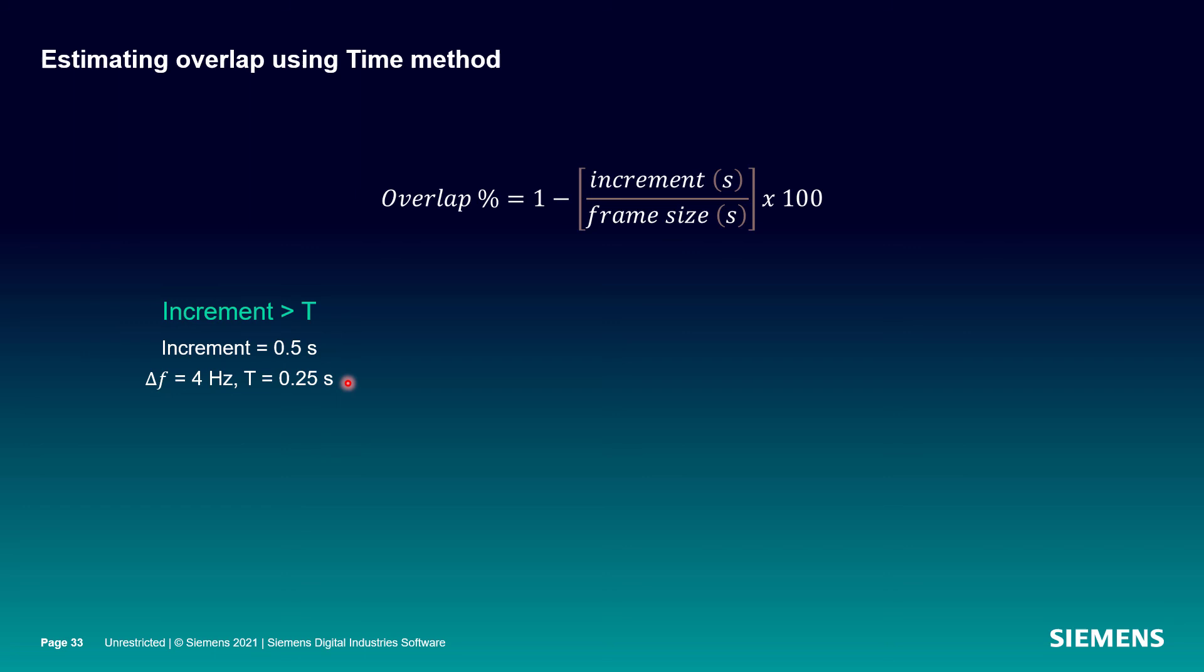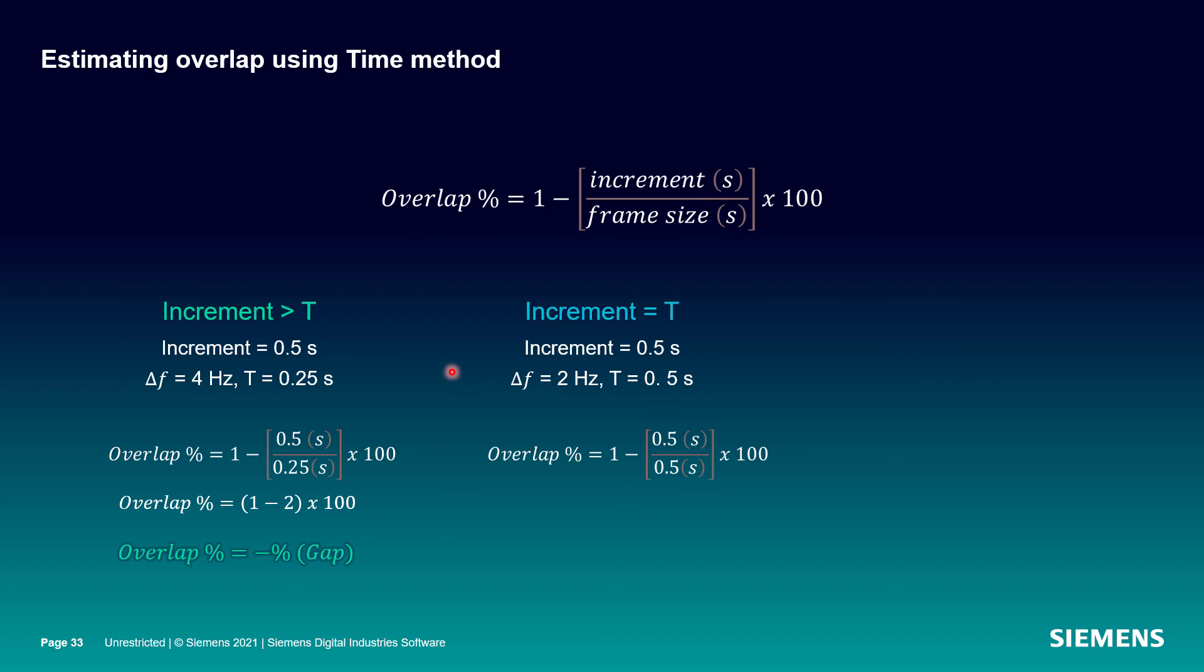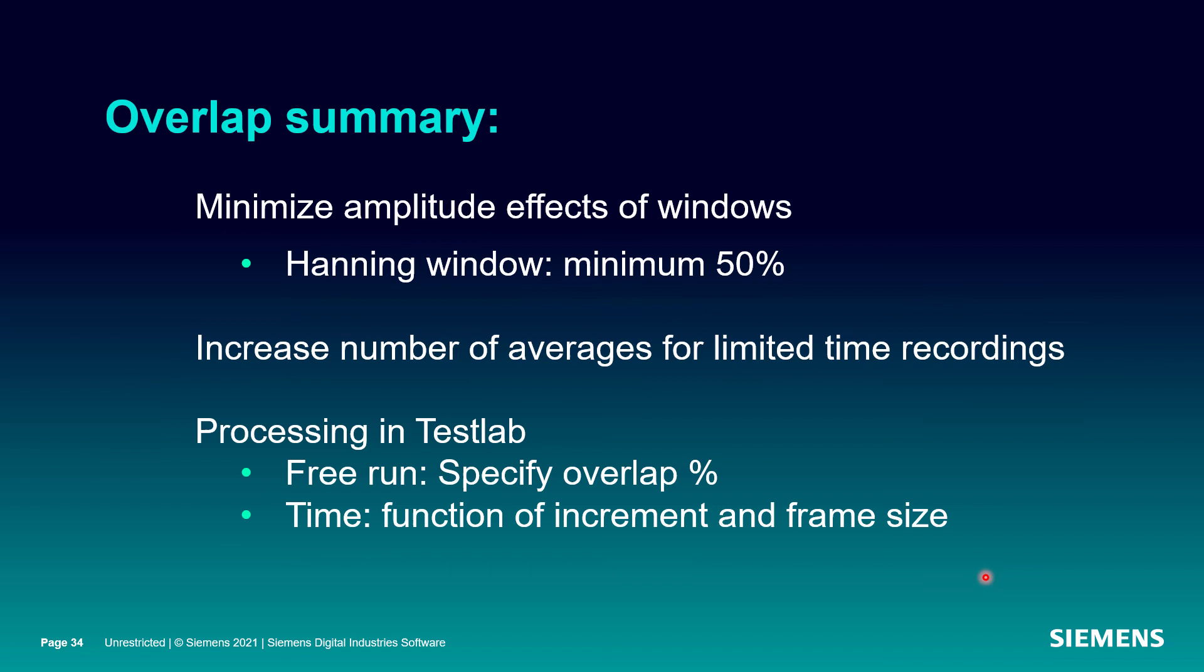Here, my increment is 0.5 seconds. My capital T is 0.25 seconds because I've set a Delta F of 4 Hertz. I put those values into my equation and I end up with a one minus two times a hundred. So I'll have a negative percentage. And that is going to indicate to me that I have a gap in my processing. If I set my increment equal to that capital T, both are half a second. I'll calculate 0% overlap here in the instance where my increment is smaller than my capital T or my observation time, half a second from an increment, one full second for my observation time. I'll have some overlap. How much? Well, we do the calculation and we calculate 50% overlap.